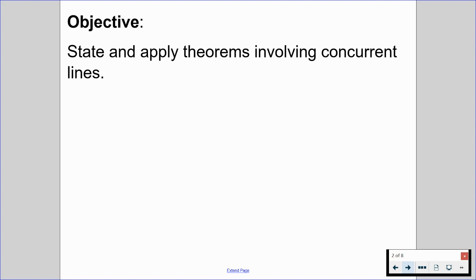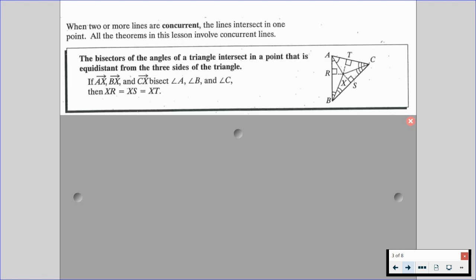Let's have out our guided notes and begin. When two or more lines are concurrent, the lines intersect in one point. All the theorems in this lesson involve concurrent lines — it's when two or more lines intersect at one point.